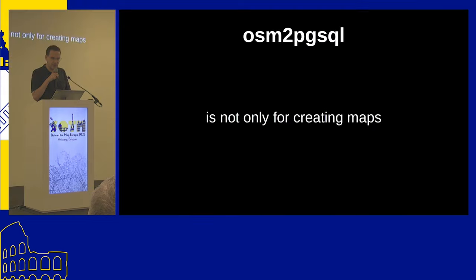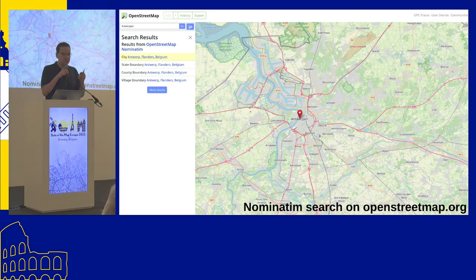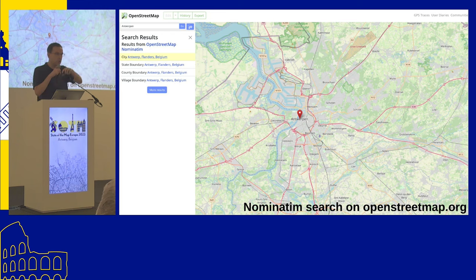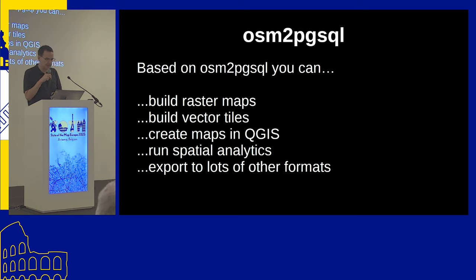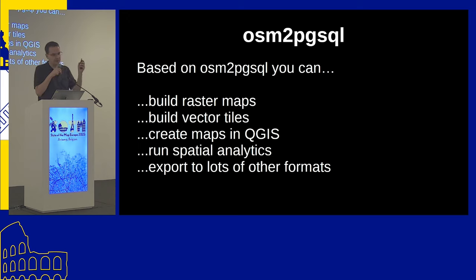This is a vector map I created myself — I'll talk about that later. But it's not only for creating maps: the Nominatim search on the OpenStreetMap website also uses osm2pgsql behind the scenes, with a lot more processing on top. You can build raster maps, vector maps, create maps for QGIS, run spatial analytics, and export to many formats supported by the PostgreSQL/PostGIS combination.